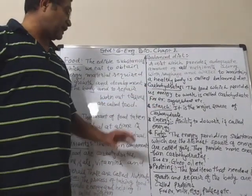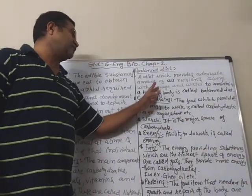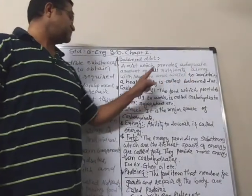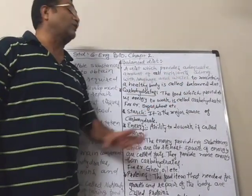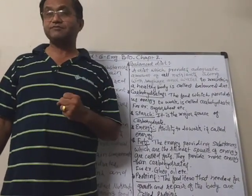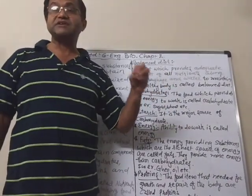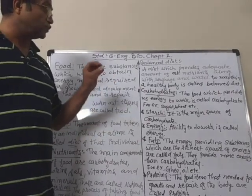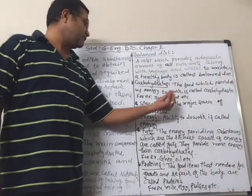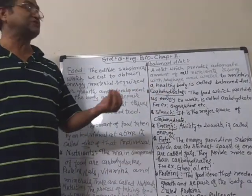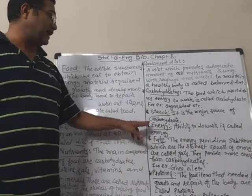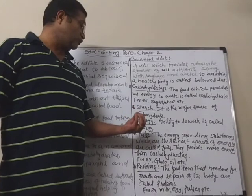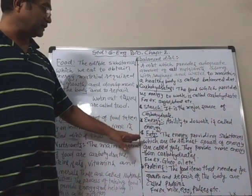Now, carbohydrates: the food which provides us energy to work is called carbohydrate. Most of the grains and sugar give us energy — they are carbohydrates. Starch is also a major source of carbohydrates; you get starch from potatoes and some other vegetables. Energy means the ability to do work.